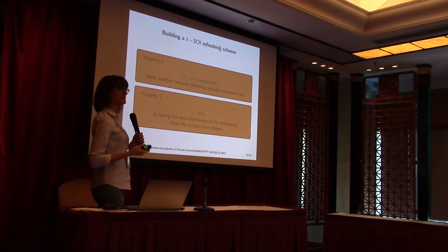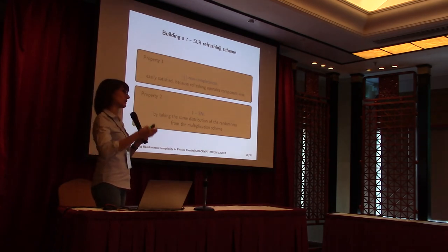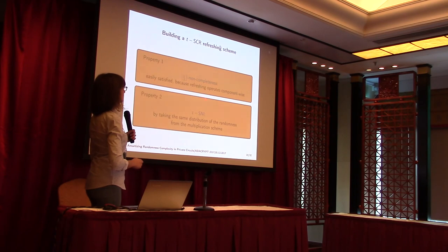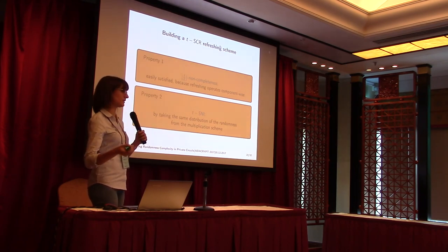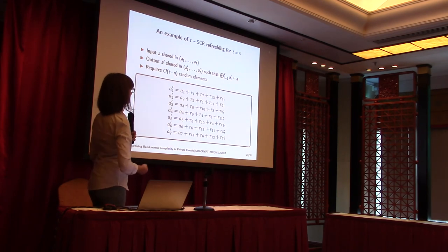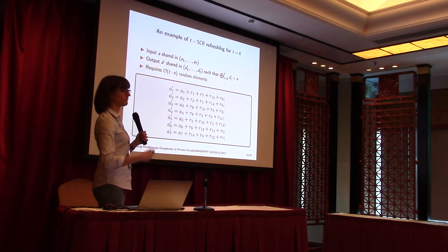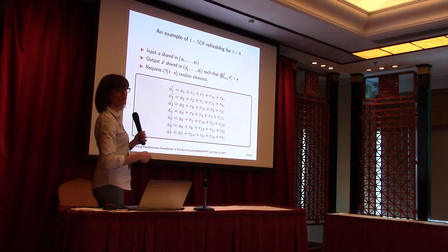Let's see how to build a refreshing scheme which is T-SCR. It's much easier than for a multiplication because the refreshing only operates component-wise — for each output we have only one component. So T-half non-completeness is very easily satisfied. For TSNI, we can just take the same distribution of randomness as in the multiplication scheme and we will still achieve TSNI. For T equal to four the example uses exactly the same random positions as before, and it requires T times N random elements.